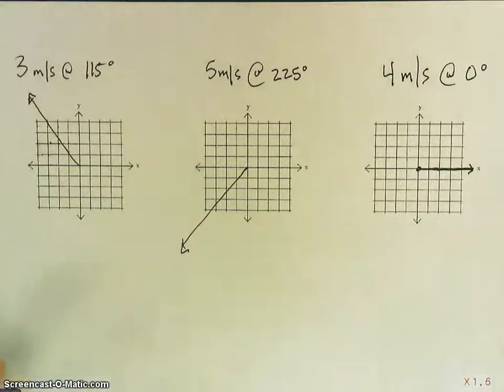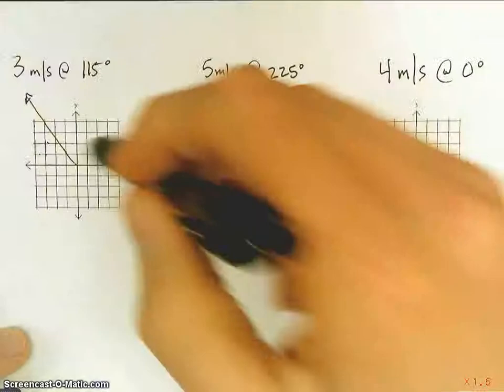Alright, so this video is teaching how to take three vectors, add them together, and find your resultant vector using trigonometry. As we've worked through, step one is draw your vectors.